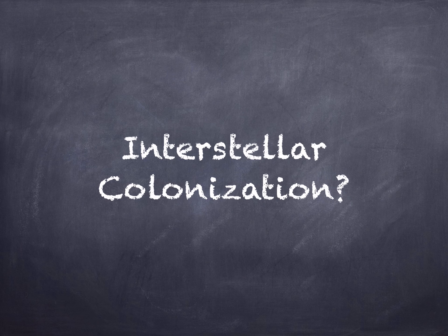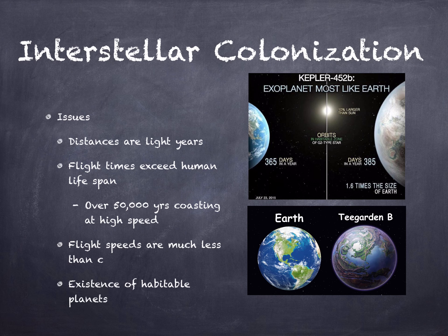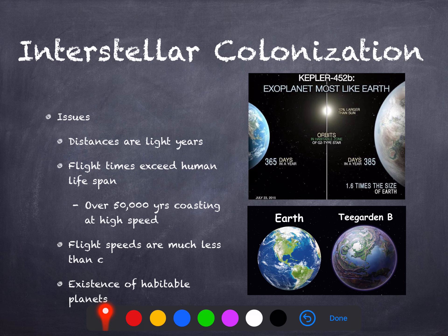Further into the future, we can dream about interstellar colonization — though at this point it's really nothing more than a dream. If the Sun were shrunk down to the size of a dime, the closest star would be as far away as Buffalo, New York. Interstellar colonization is really unachievable with current technologies. Nevertheless, if we were to think about what kinds of planets we'd want to go to, we'd want Earth-like exoplanets, and some have been found. Two examples of the most Earth-like exoplanets are Kepler-452b and Teagarden b.